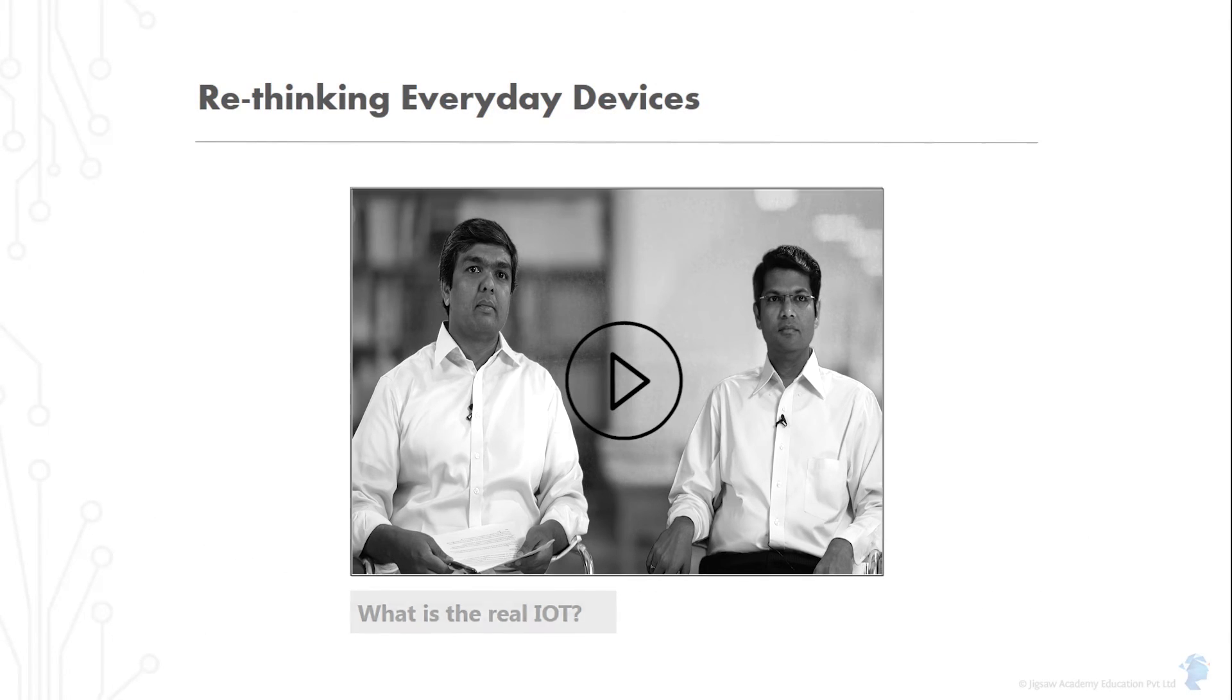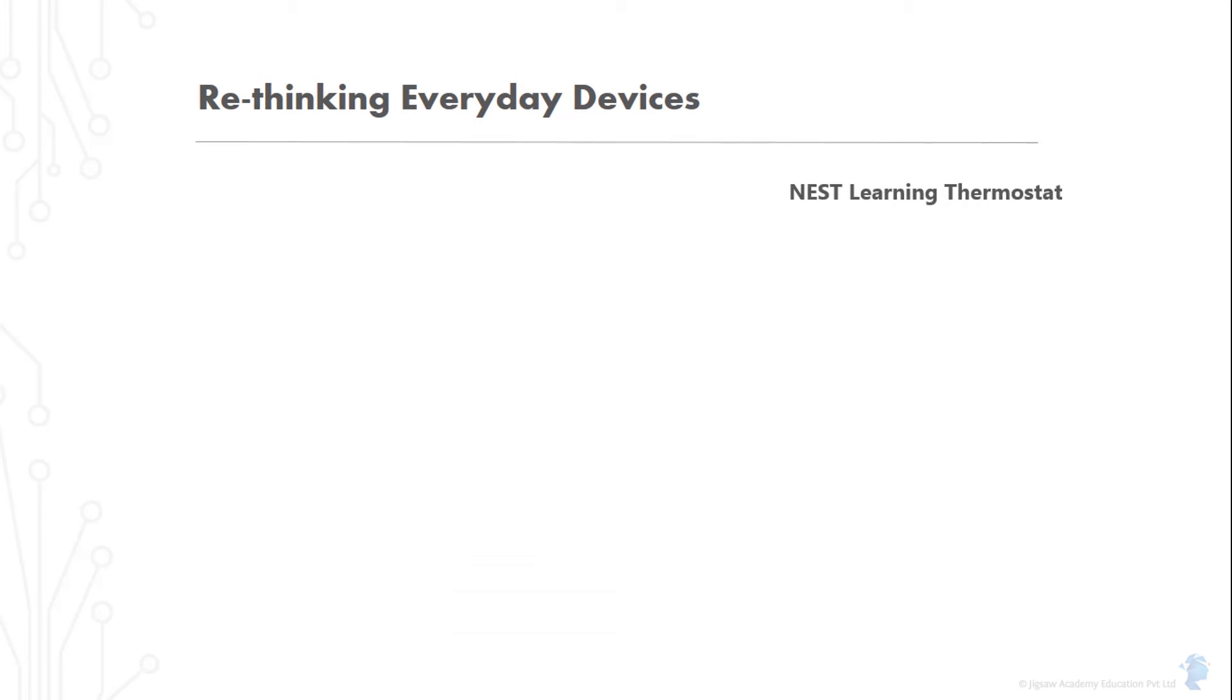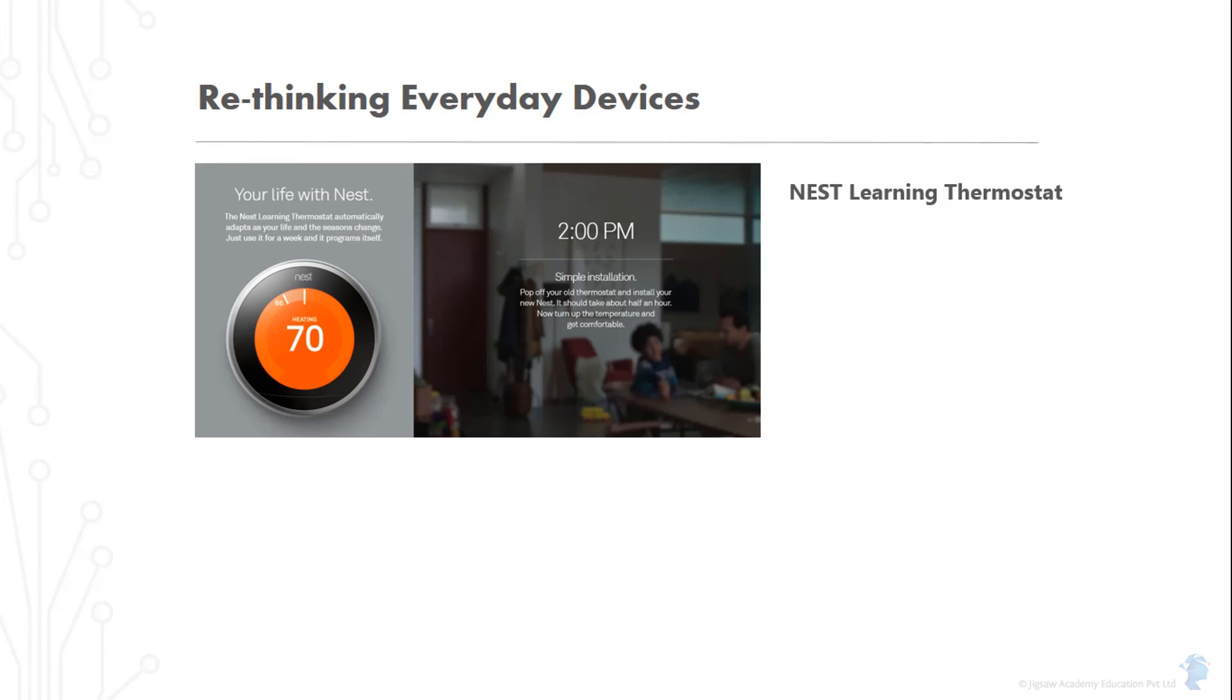Take, for example, the Nest Learning Thermostat. Like any other thermostat, it lets you control the temperature of your home. Even as it does so, it learns about your routines. When you leave the house, when you come back in, what temperature you like the house to be in the morning versus the night and so forth.